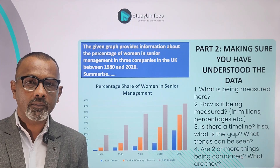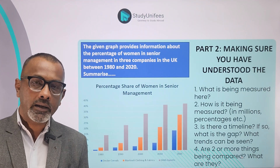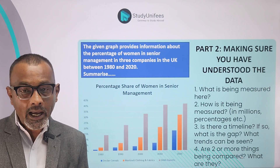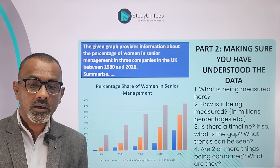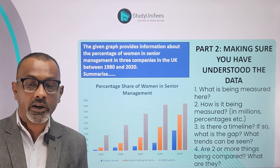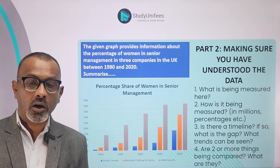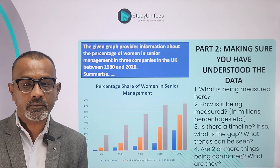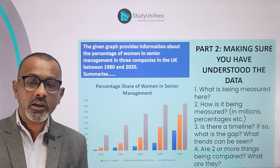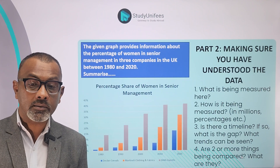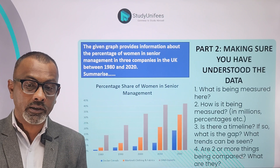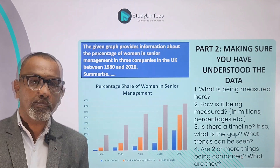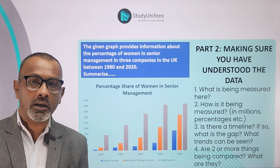Question number 3: is there a timeline? Yes, there is a clear timeline in increments of 10 years. Can trends be seen? Yes, we see a clearly rising trend in Saka Exports and also a clear rising trend in Martinelli Clothing and Fabrics. Question number 4: are two or more things being compared? Several things are being compared — first and foremost, three companies, and also five time periods.